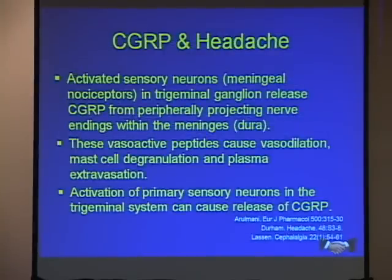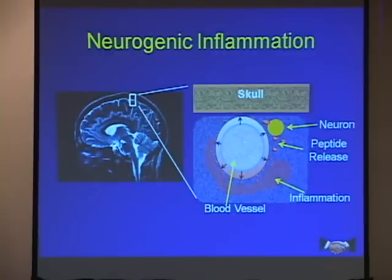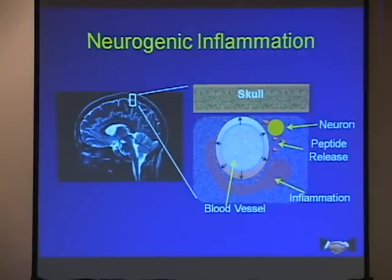CGRP-activated sensory neurons in the trigeminal ganglion release it — they go peripheral as well as central. Peripherally, it's the middle meningeal branch of the maxillary division of the trigeminal nerve that has an afferent fiber going up into the dura. So the trigeminal branches — ophthalmic, maxillary, mandibular — include a branch off the maxillary nerve that goes up and feeds all the blood vessels in the dura. If I have trigeminal activation and production of CGRP, it goes out to the end of that nerve, releases into the tissues around that blood vessel, and causes vasodilation.